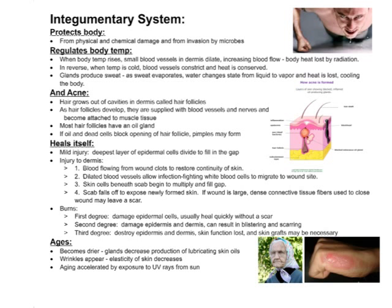So what does the integumentary system do? It protects the body from physical and chemical damage and from invasion by microbes. It also regulates body temperature. When body temperature rises, the small blood vessels in the dermal layer dilate, increasing blood flow, and body heat can be lost as it radiates out. The reverse happens when it's cold — blood vessels constrict and heat is conserved. Also, glands produce sweat, and as that sweat evaporates, heat is lost, cooling the body and maintaining homeostasis.